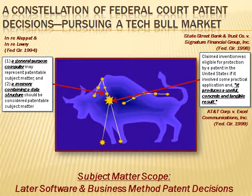The Court emphasized that software or other processes that yield a useful, concrete, and tangible result should be considered patentable, and laid to rest the business method exception of unpatentability. This meant that while prior courts considered business method inventions to be unpatentable, the State Street Court found that these inventions are as patentable as any other inventions.